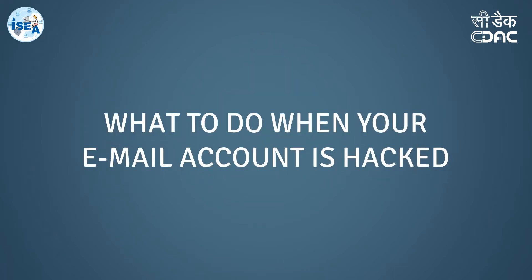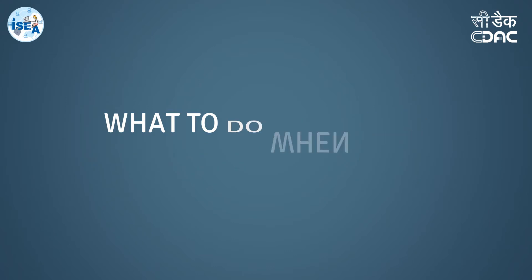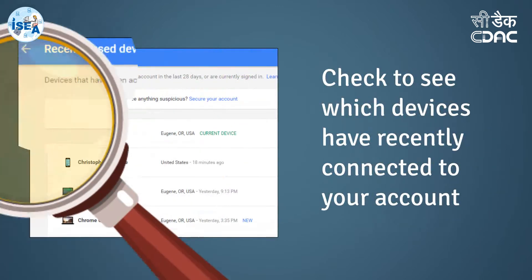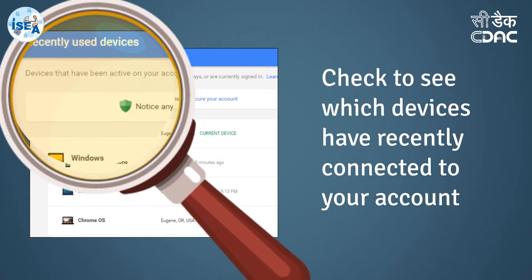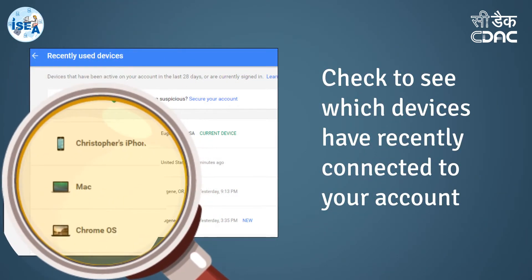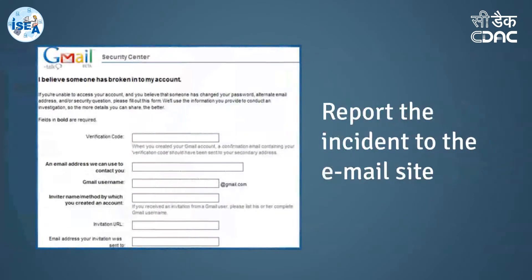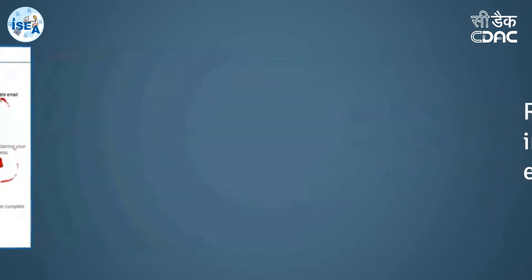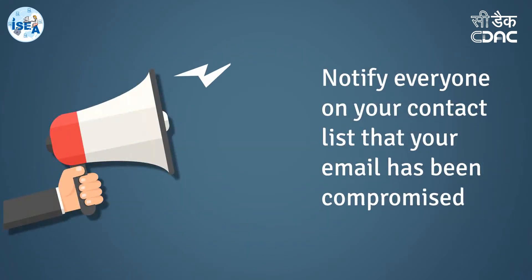What to do when an email account is hacked? Reset your password and make sure that it is strong and hard to guess. Check to see which devices have recently connected to your account. Report the incident to the email site. Notify everyone on your contact list that your email has been compromised.